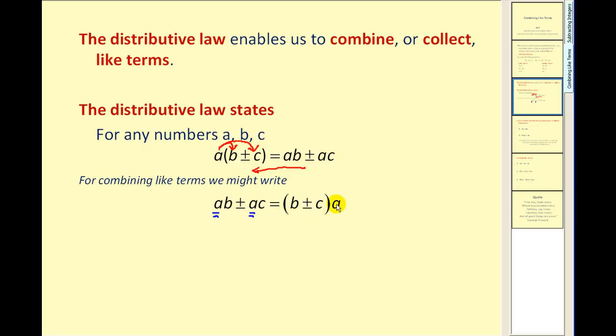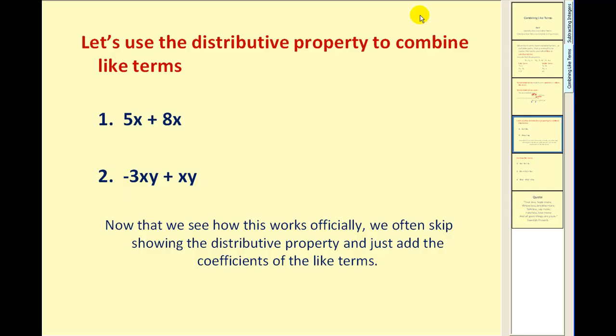Normally the distributive property they write the common factor in the front or to the left of the parenthesis. In this case we are going to write it on the right. Now remember we are allowed to do that because this is connected by multiplication. And due to the commutative property we can change the order of things being multiplied.